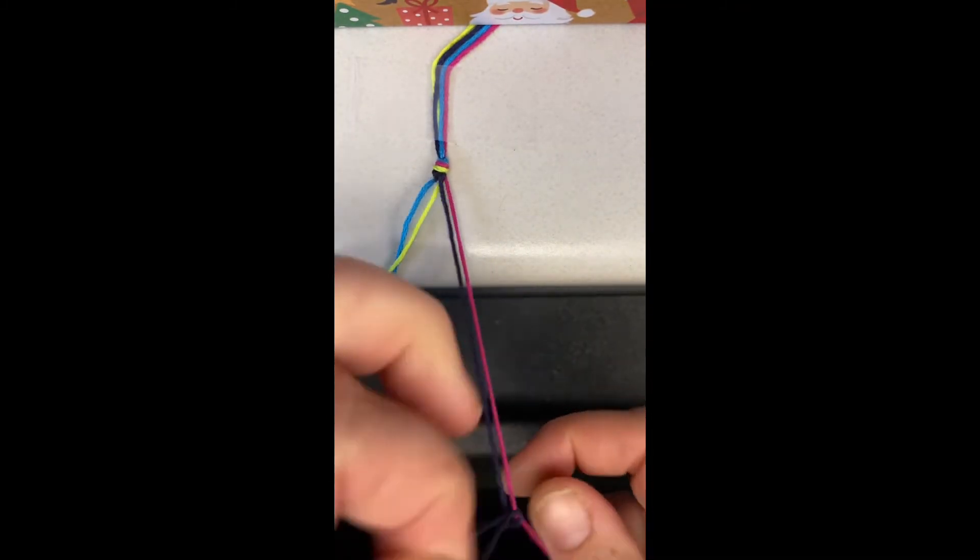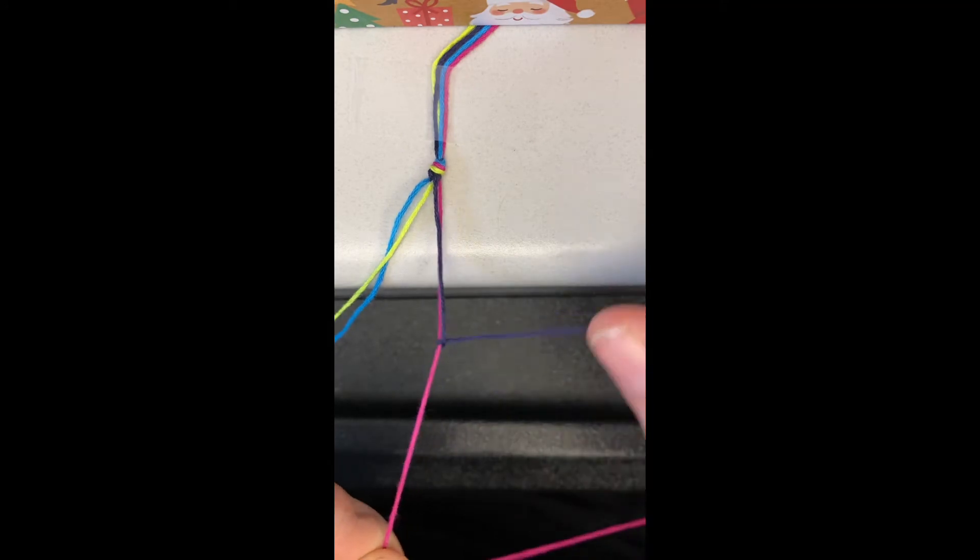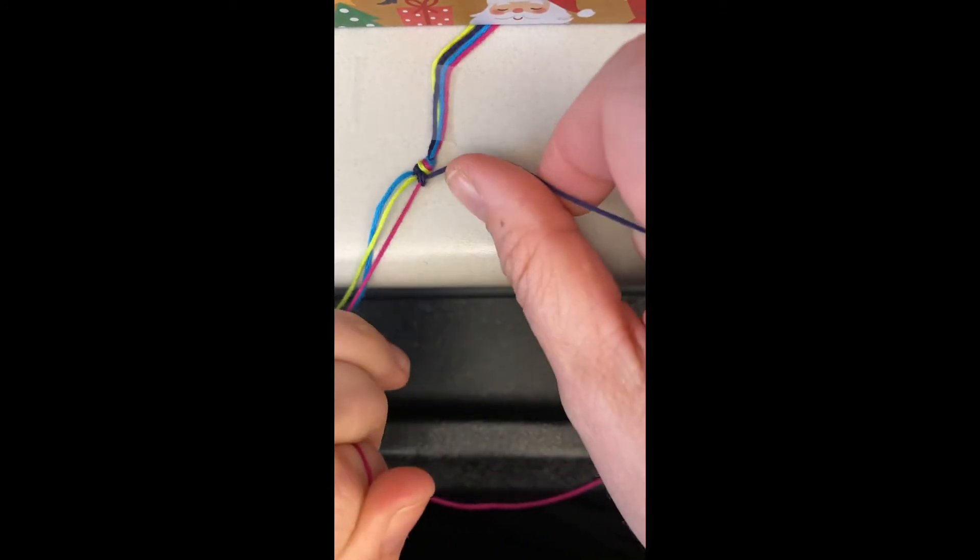When you're done, you just tie a knot at the end and then you can tie it around your wrist, your ankle, wherever you'd like to wear it.